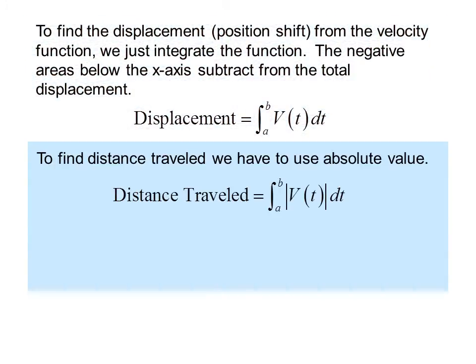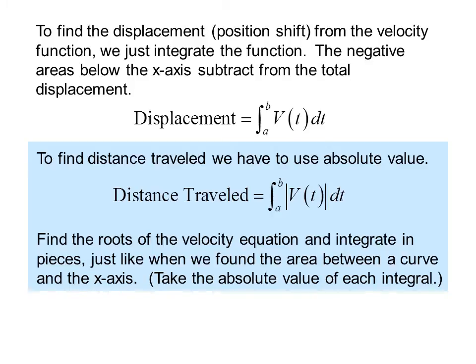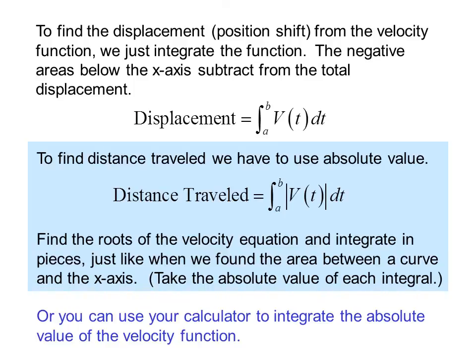To find distance traveled, we have to use absolute value. Distance traveled equals the integral from a to b of the absolute value of v(t) dt. If we're doing this by hand, we find the roots of the velocity equation and integrate in pieces, just like when we found the area between a curve and the x-axis. We take the absolute value of each integral. Or you can use your calculator to integrate the absolute value of the velocity function.